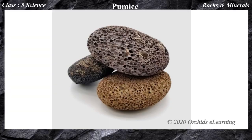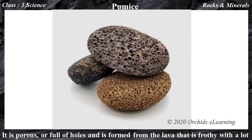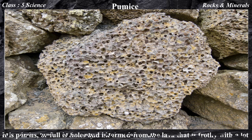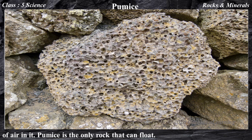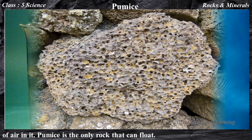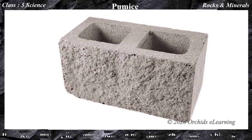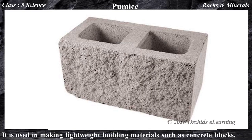Pumice — it is porous, or full of holes, and is formed from lava that is frothy with a lot of air in it. Pumice is the only rock that can float. It is used in making lightweight building materials such as concrete blocks.